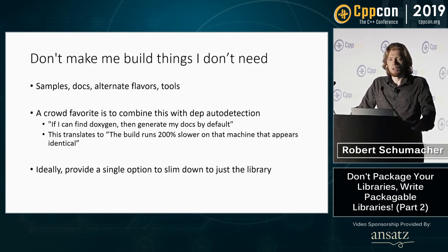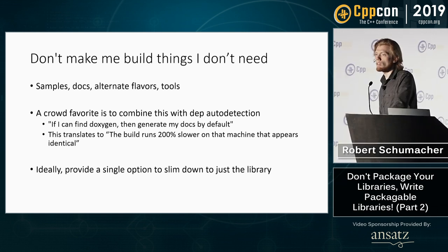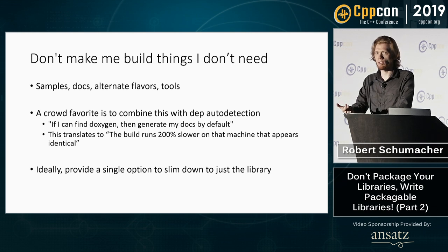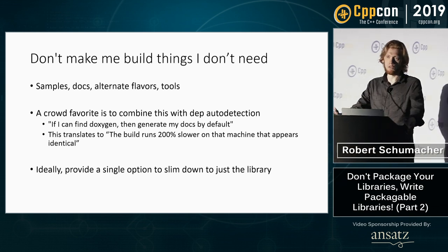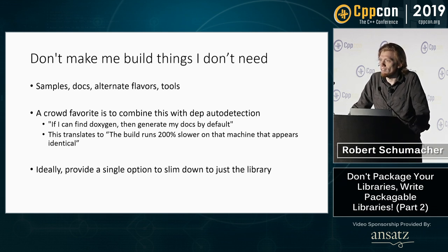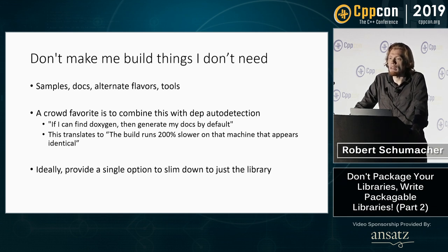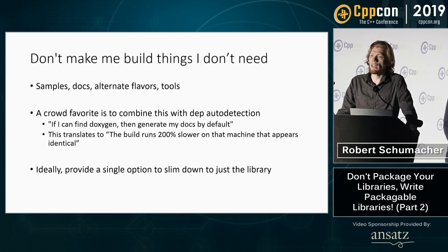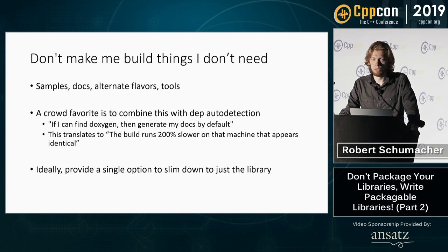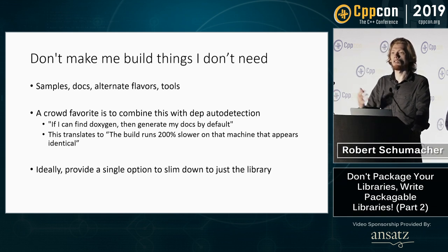This is most commonly subverted in the case of documentation. I cannot count the number of times I've seen a library try to find Doxygen on the system and use whether it found Doxygen to determine whether or not to build documentation. Doxygen is not the fastest thing in the world, so this comes up where on some systems the library builds in 30 seconds, and on other systems it builds in 2 minutes and 30 seconds because it found Doxygen. The job of a package manager is to produce the same thing on any different system. Auto-detection is really subverting what my purpose is, and building all of these extra things optionally is actively harmful.